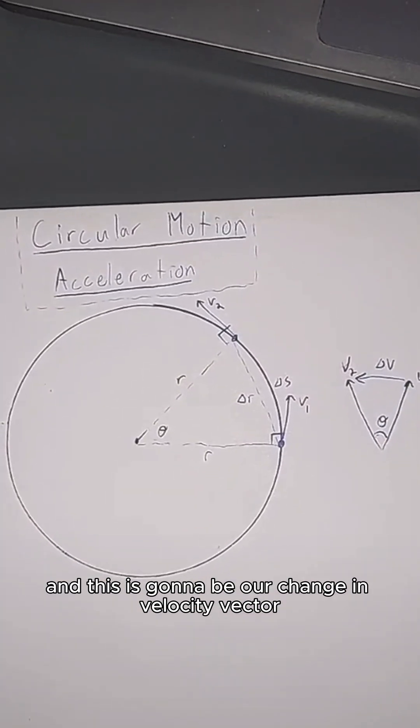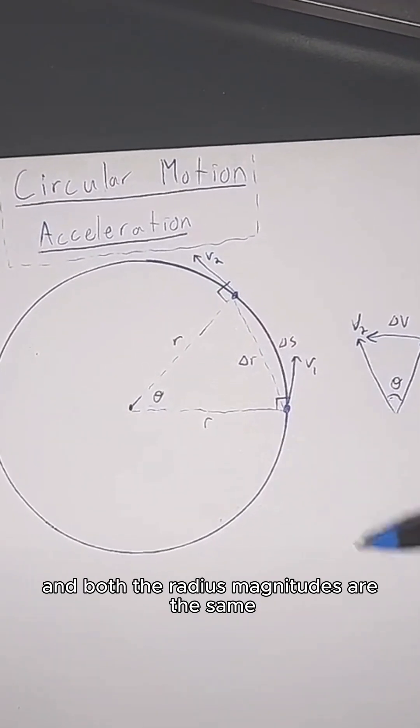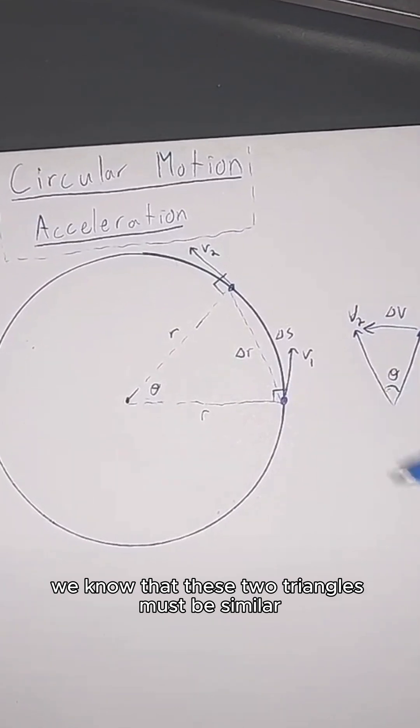And this is going to be our change in velocity vector. Since we know both velocity magnitudes are the same, and both the radius magnitudes are the same, we know that these two triangles must be similar.